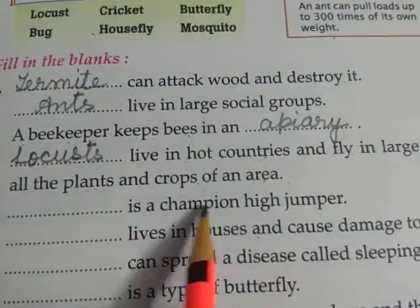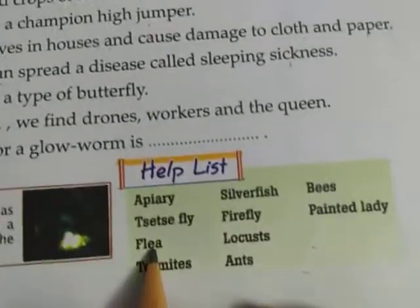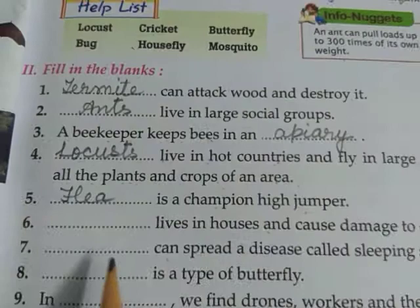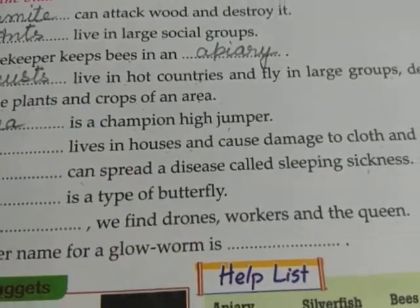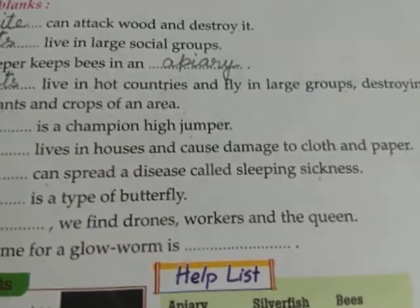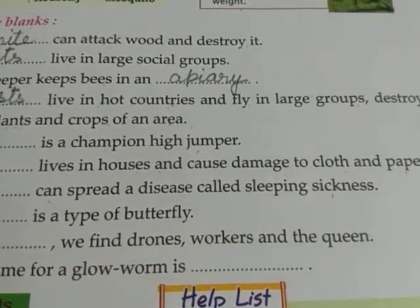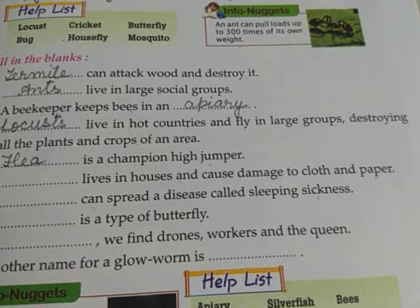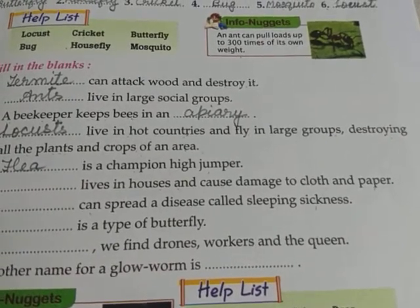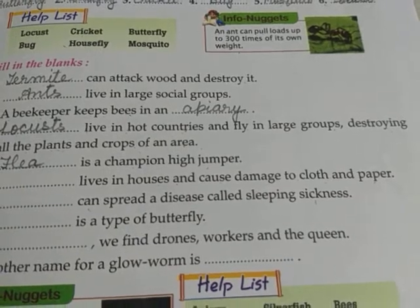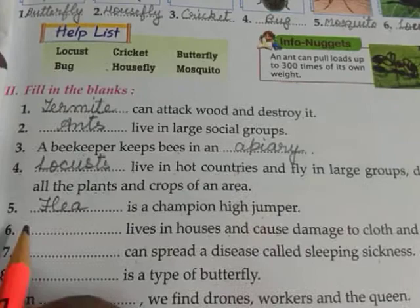Number five: blank is a champion high jumper — that is flea. Number six: blank lives in houses and causes damage to cloth and paper — that is silverfish. Silverfish lives in houses and damages books, cloth, and paper that are stored and left unused for many days.